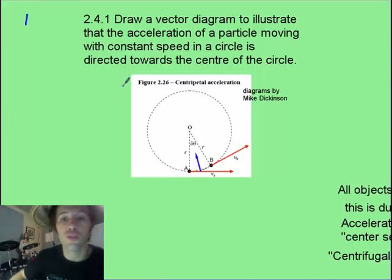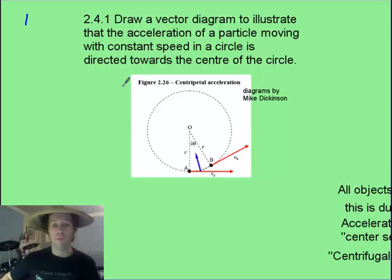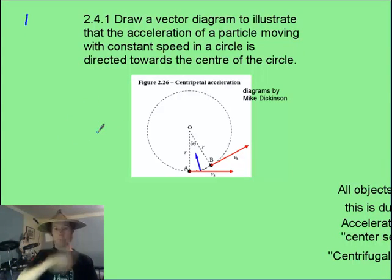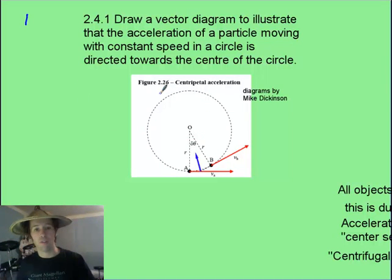We should be able to draw some vector diagrams to represent what's happening in circular motion. Let's say you've got some object going in circular motion like this. Say it's going counter-clockwise, or anti-clockwise if you're of the British persuasion. At any point, let's say this point down here,